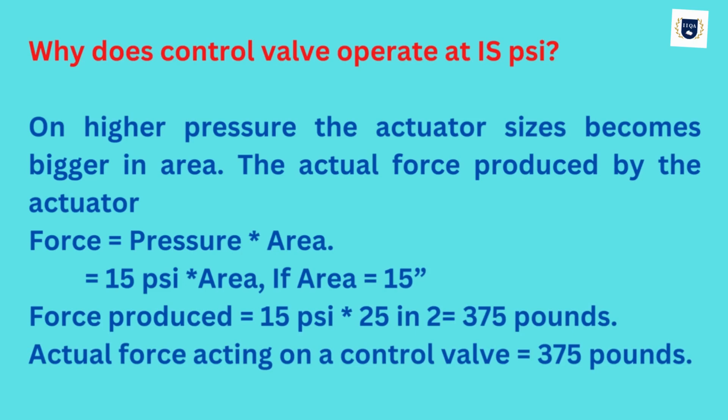If area equals 15 inches, force produced equals 15 psi * 25 in² = 375 pounds. Actual force acting on a control valve is 375 pounds.